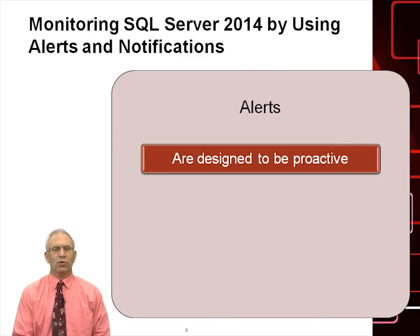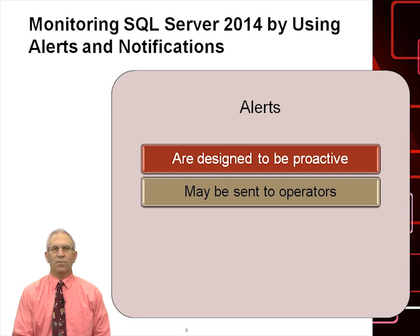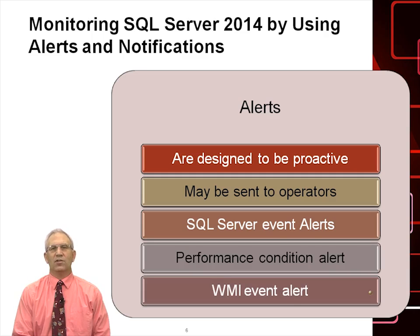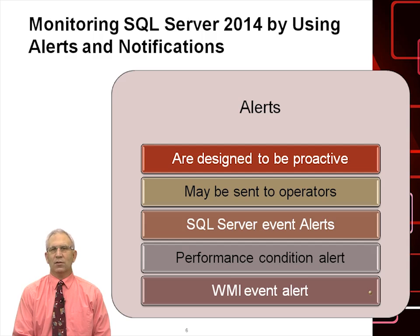An alert is proactive information sent to an operator that tells them something bad is about to happen within your SQL Server instance — before your phone rings and the end user says the system is running slow or is down. We can create a series of alerts: performance condition alerts, WMI alerts, or SQL Server event alerts. Typically you will create a performance condition alert or a SQL Server event alert. When that event occurs, we can send that alert to an operator.